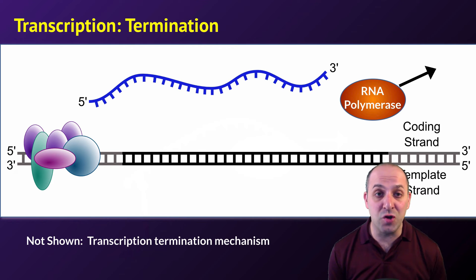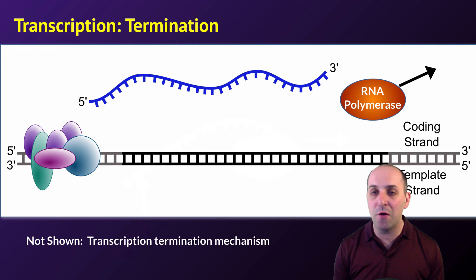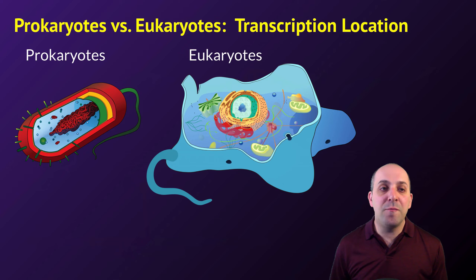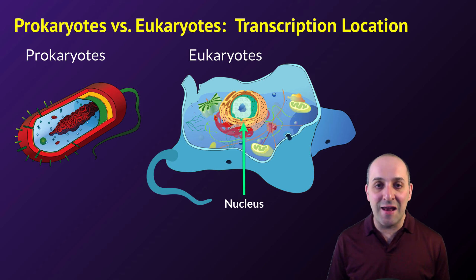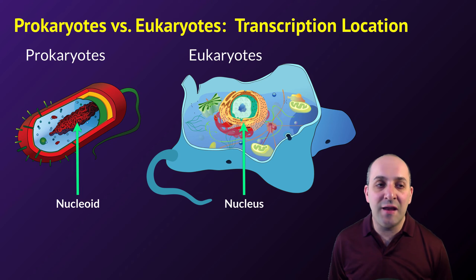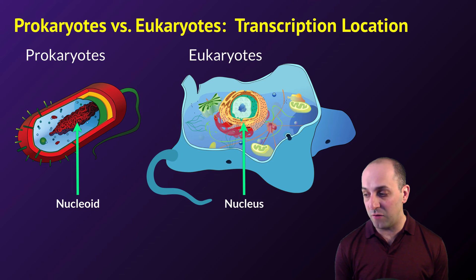That's transcription — that's how it works, and it's the first step in gene expression. Before we wrap up, let's talk about a couple of differences between prokaryotes and eukaryotes in the transcription process. The first main difference is where transcription occurs in the cell. Eukaryotes have a nucleus that contains the DNA, and that's where transcription will happen. In prokaryotes, the DNA is kept in a region of the cytoplasm known as the nucleoid, which is the location of transcription in prokaryotic cells.